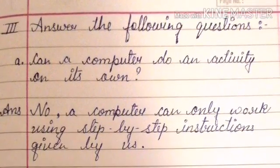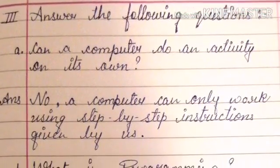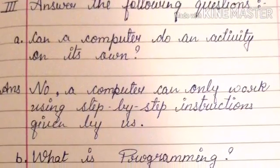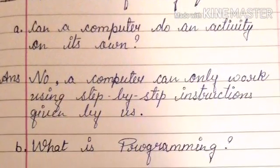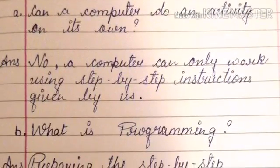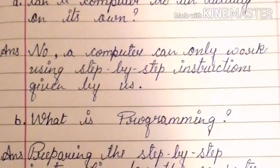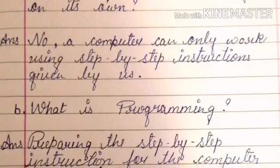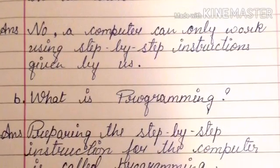Question number 1: Can a computer do an activity on its own? The answer is no. A computer can only work using step by step instructions given by us.